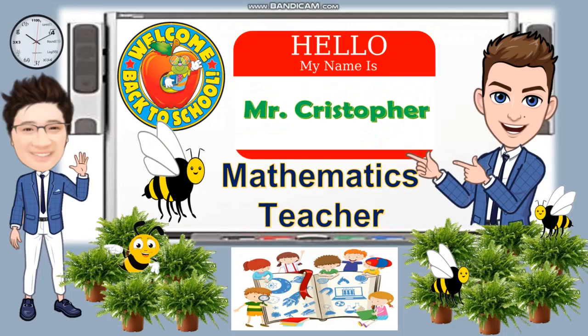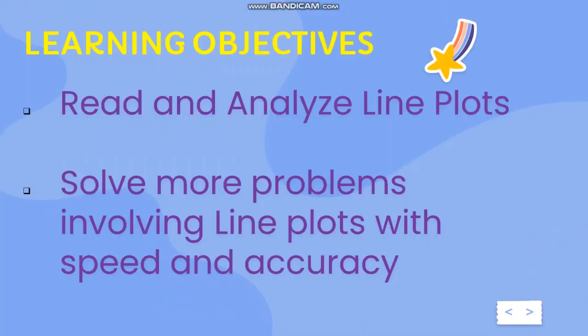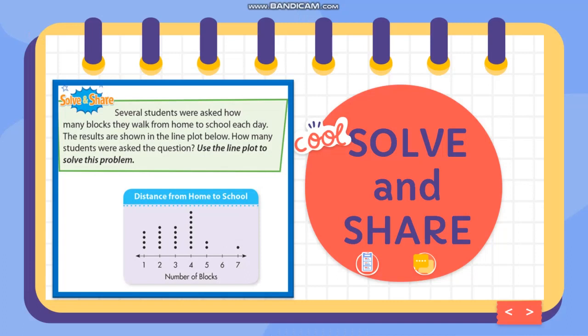You will find this lesson on pages 699 to 702 from your book. Here are the learning objectives for today's lesson: you are going to read and analyze line plots and solve more problems involving line plots with speed and accuracy. Now let's analyze this problem: several students were asked how many blocks they walk from home to school each day.